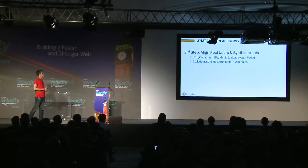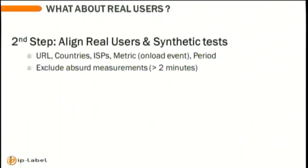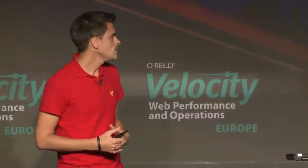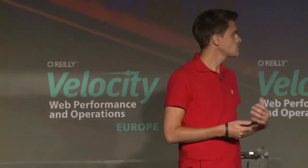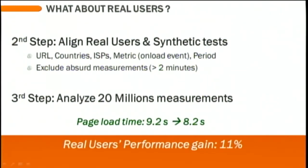So I did analyze the real users. For that, I need to align because I want to compare what's comparable — the same country, the same ISP to avoid any location effect, the same page metrics. I've also been excluding some absurd measurements, which unfortunately happens with real user data. By analyzing about 20 million measurements, I found out that we saved just one second, which is not so bad, but still that's only a gain of 11% — not the 25% improvement shown by synthetic trends.